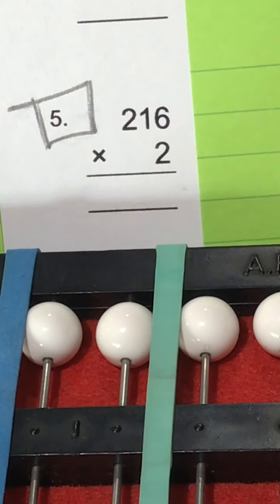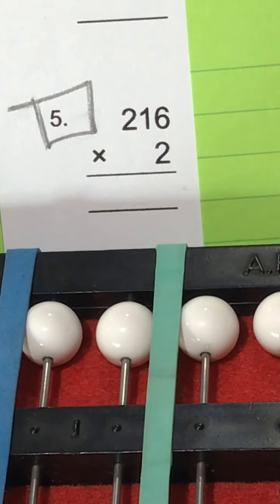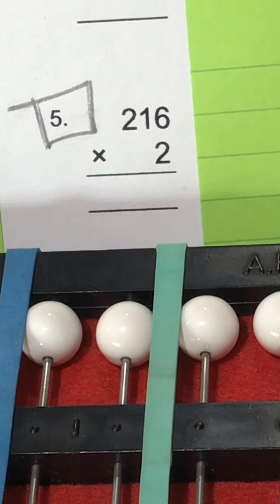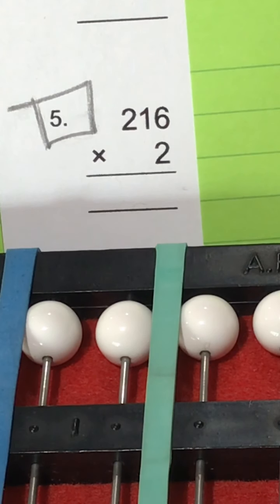So go ahead and write number one period and then I want you to braille out 216 times 2 and then don't forget your equals. See if you can solve it on your own first before looking and continuing watching my video. Okay, so go ahead and hit pause.